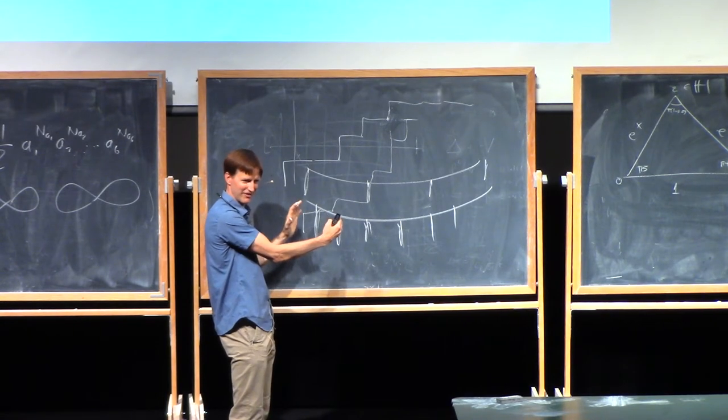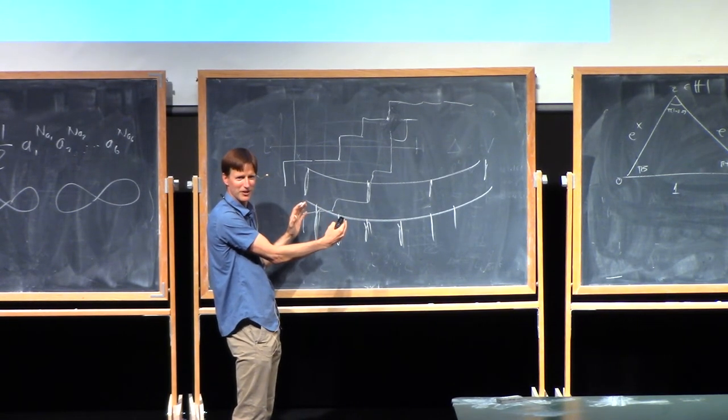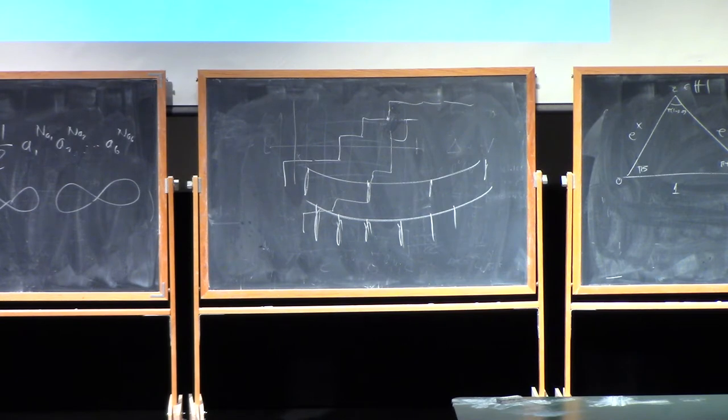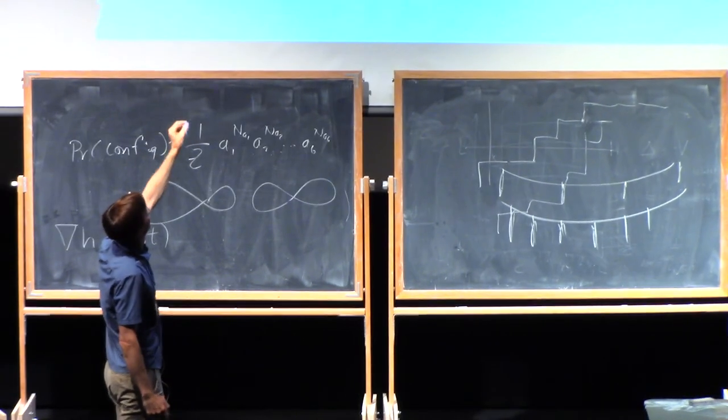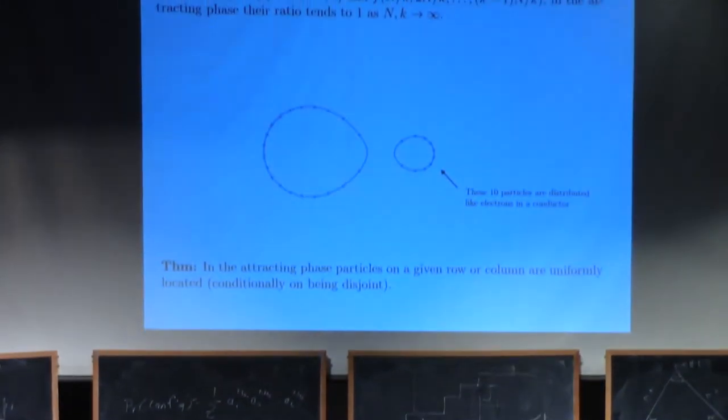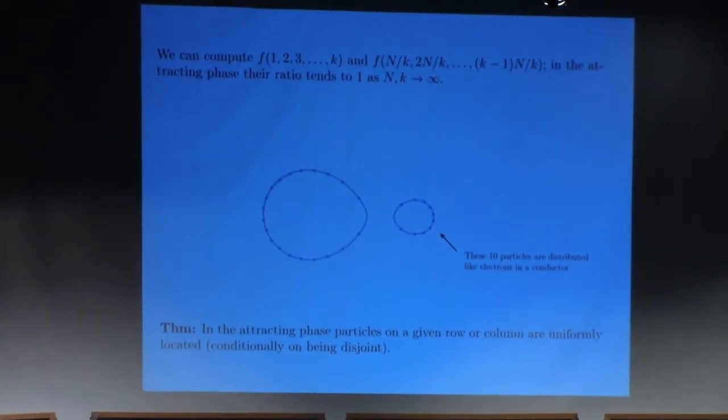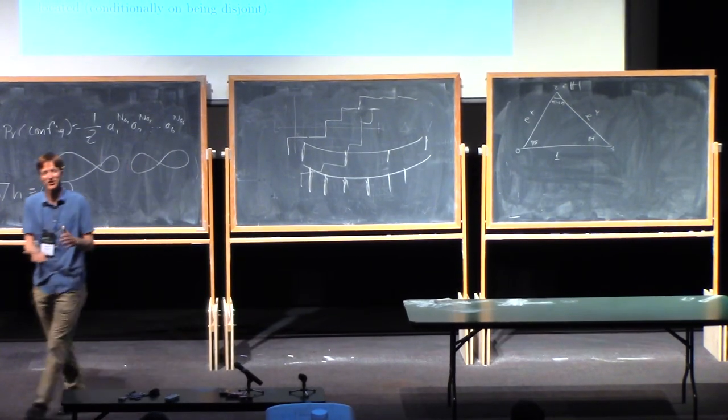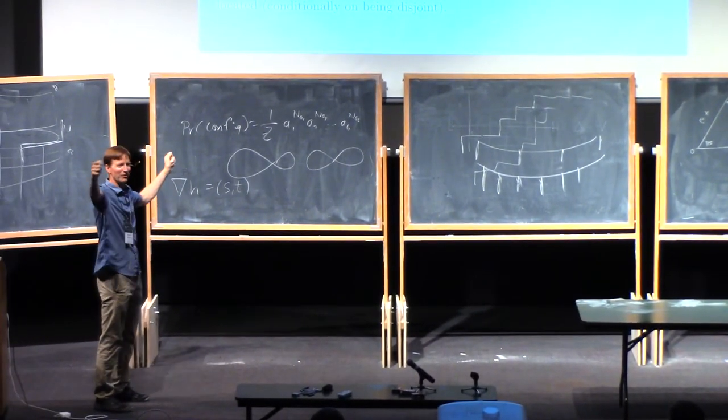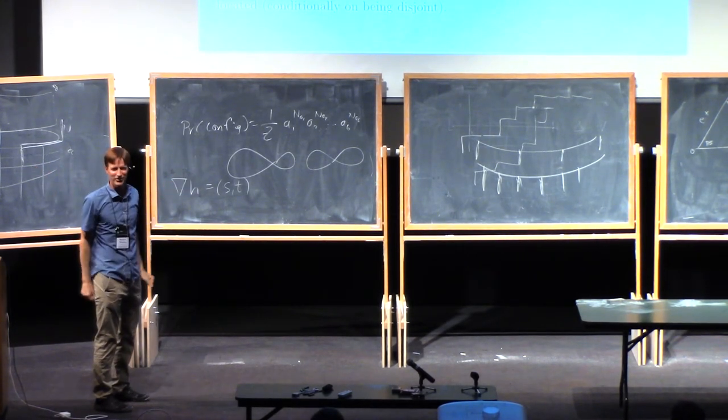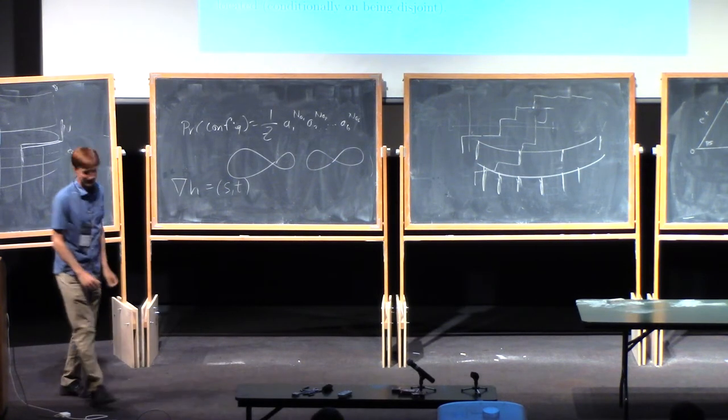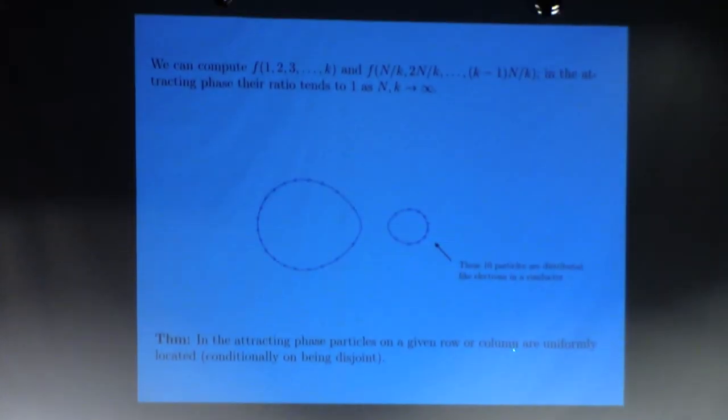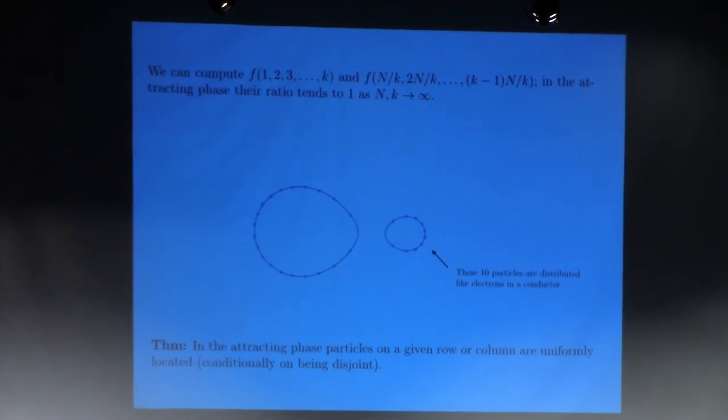When I cram all the paths next to each other, that should be sort of the smallest probability event. And when I let... And I would give them all the maximal space between them, that should be the largest probability event. And when you compute the ratio of these probabilities, both of which you can do, the ratio tends to 1. And if... So if this is really the largest probability event, and that's really the smallest probability event, then all events have exactly the same probability, because the ratio of the largest to the smallest tends to 1. And therefore, the system doesn't... It's just a uniform measure on all configurations of k points in n.